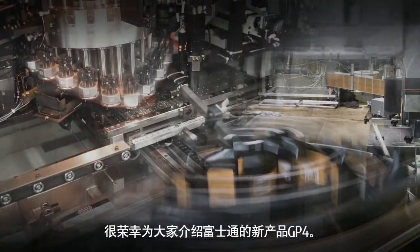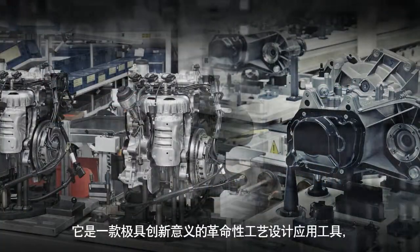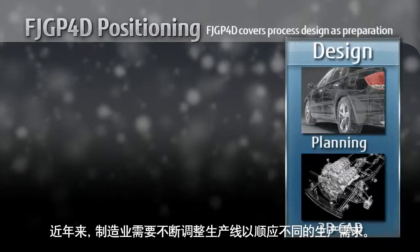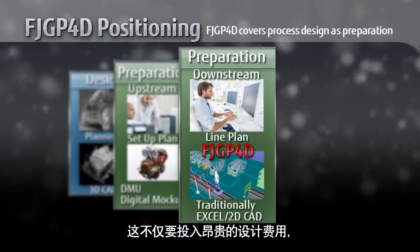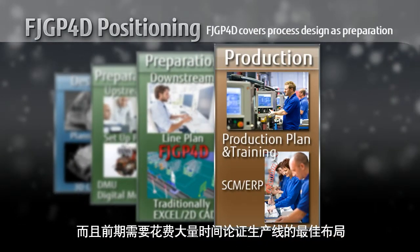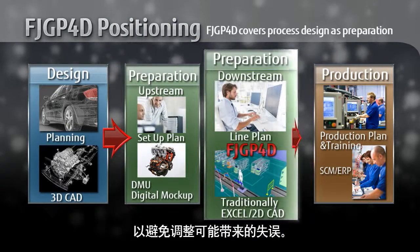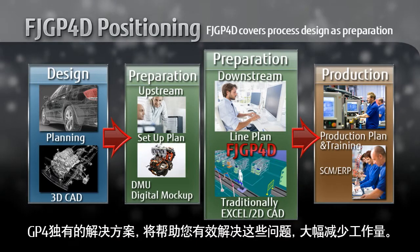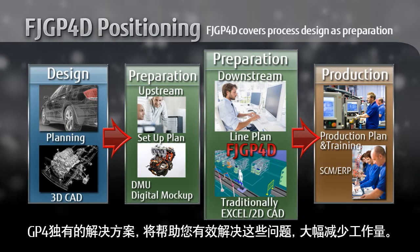Fujitsu proudly introduces GP4, a revolutionary tool for simulating production process plans and designing production lines. Recently, factory production lines are frequently being rearranged to respond to changes in production needs. This is expensive and involves a lot of effort in designing new production lines in trial and error until the optimum line layout is determined. GP4 is a unique solution that greatly reduces the workload involved.